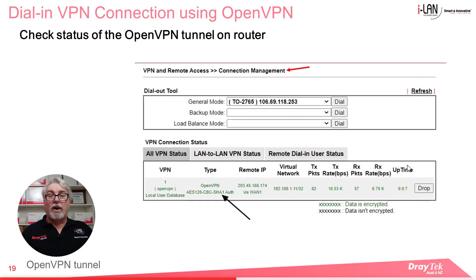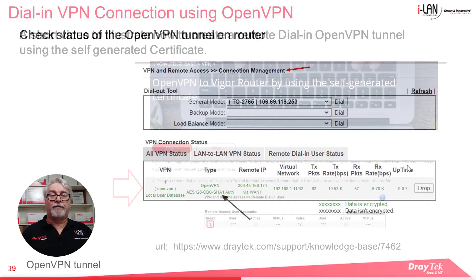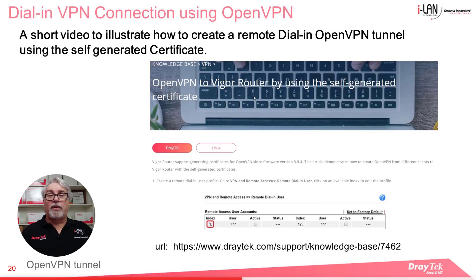If all went well, go to VPN and Remote Access, Connection Management, and you should see that the OpenVPN tunnel is established. You should see green text indicating that the data is encrypted. This procedure is also covered in an application note linked in the description below.